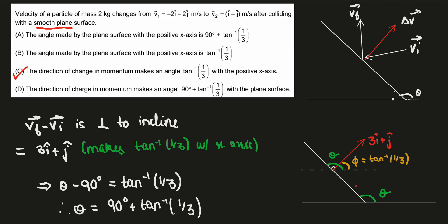For the first two options, the angle theta is the angle made by the plane surface with the positive x-axis. Since the change in velocity vector is 3i cap + j cap, the plane is perpendicular to this vector — as there is no change of momentum along the plane. So this entire theta is basically 90 plus phi, since the plane makes angle theta and this vector makes angle phi, and both are at 90 degrees to each other.